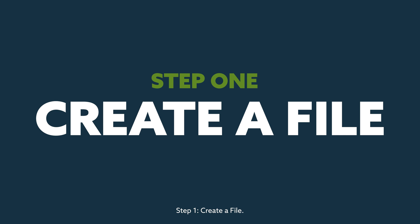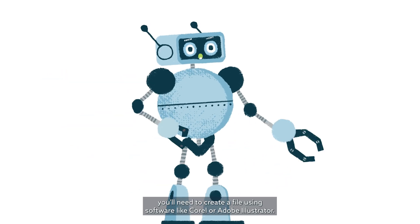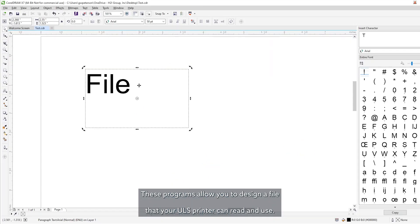Step 1: Create a file. To start, you'll need to create a file using software like Corel or Adobe Illustrator. These programs allow you to design a file that your ULS printer can read and use.